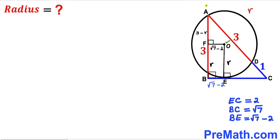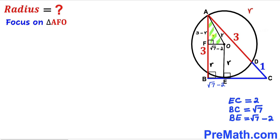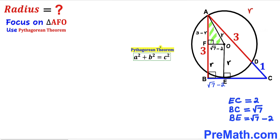In the next step, I'm going to connect center O with point A as well. Observe that AO is also a radius of this circle, so I'll label it lowercase r. Now let's focus on the small right triangle AFO and apply the Pythagorean theorem. The hypotenuse is radius r, and our two legs are (3 − r) and (√7 − 2).